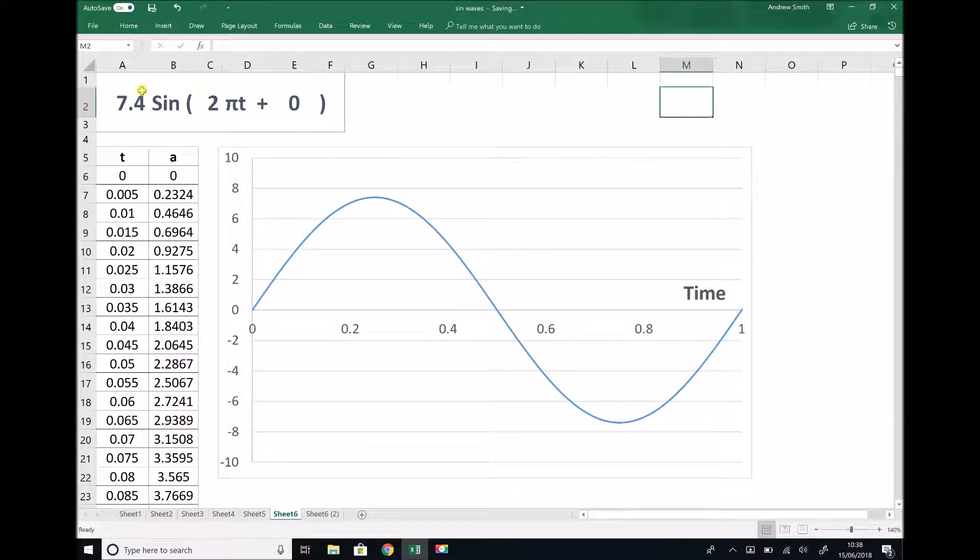So now what we can see is the function 7.4 sin 2πt plus zero repeats every one second. And in actual fact, this coefficient or this number in front of t, 2π, represents something that we call the angular frequency.